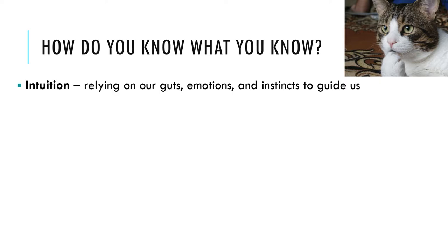Intuition. The first method of knowing is intuition. When we use our intuition, we're relying on our gut, our emotions, and our instincts to guide us. Rather than examining facts or using rational thought, intuition involves believing what feels true. The problem with relying on intuition is that our intuitions can be wrong because they're driven by cognitive and motivational biases rather than logical reasoning or scientific evidence.